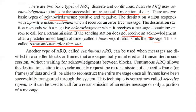Continuous ARQ can be used when messages are divided into smaller blocks or frames that are sequentially numbered and transmitted in succession without waiting for acknowledgements between blocks. Continuous ARQ allows the destination station to asynchronously request the retransmission of a specific frame of data and still be able to reconstruct the entire message once all frames have been successfully transported. This technique is sometimes called selective repeat, as it can be used to call for retransmission of the entire message or only a portion of the message.